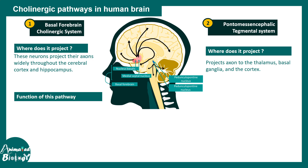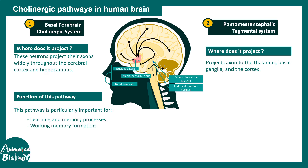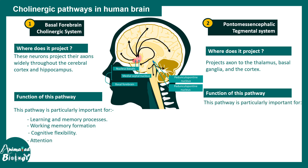The function of the basal forebrain cholinergic system is to promote learning and memory-related processes. It helps in working memory formation, cognitive flexibility, and attention. The function of the pontomesencephalic tegmental system includes regulating the sleep-wake cycle, arousal, and motor control — it also modulates motor activities.